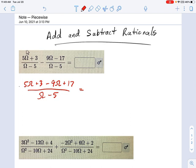So we just move through this and collect our common terms together. This is negative four omega. And three plus 17 is 20 over omega minus five.